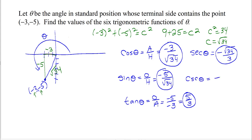For sine, the reciprocal function is cosecant, so we take the reciprocal: csc θ = -√34/5. And cotangent is the reciprocal of tangent, so cot θ = 3/5.